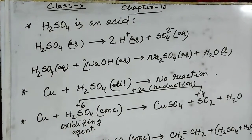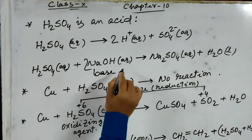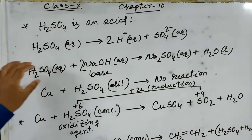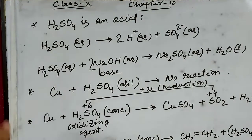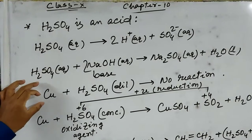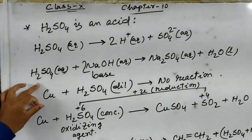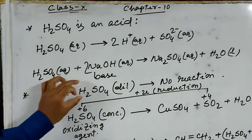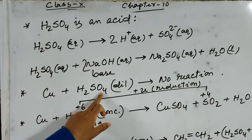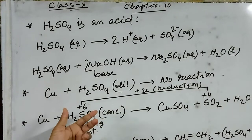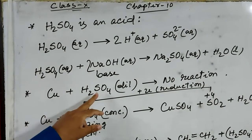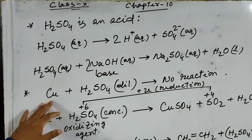H₂SO₄ reacts with sodium hydroxide, which is a strong base, to produce sodium sulphate and water — confirming H₂SO₄ is an acid. Dilute sulphuric acid does not react with copper, because in the reactivity series of metals, the position of copper is below hydrogen. That's why copper cannot replace hydrogen from sulphuric acid. Also, dilute sulphuric acid has no oxidizing property. If the amount of water is higher than the amount of sulphuric acid in solution, it is known as dilute sulphuric acid.